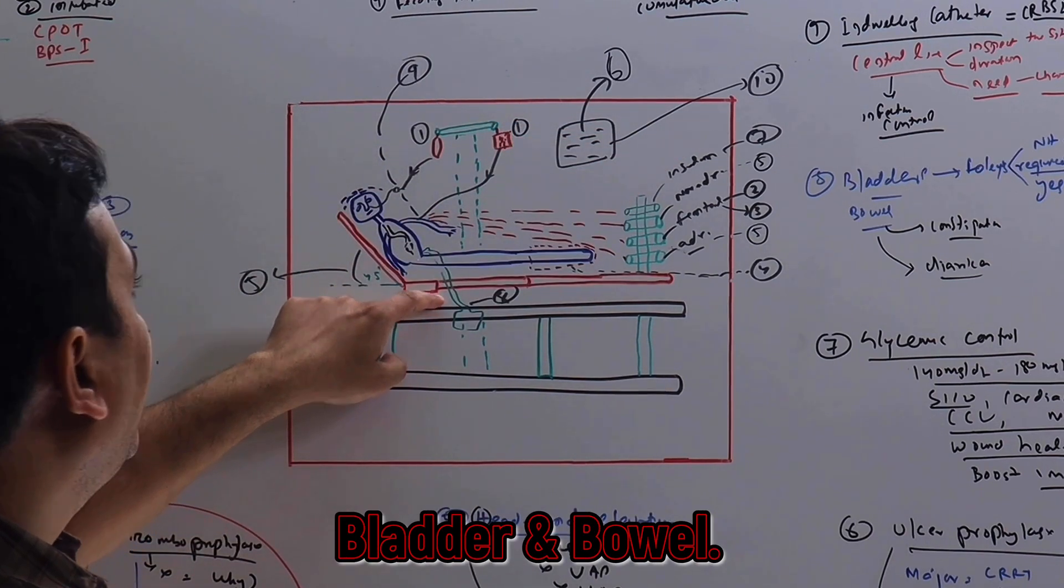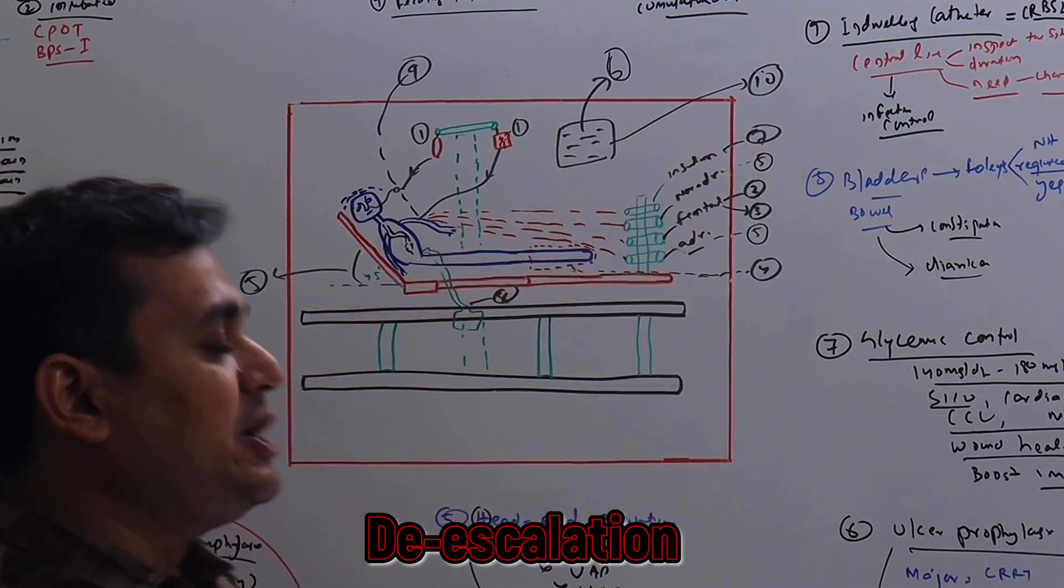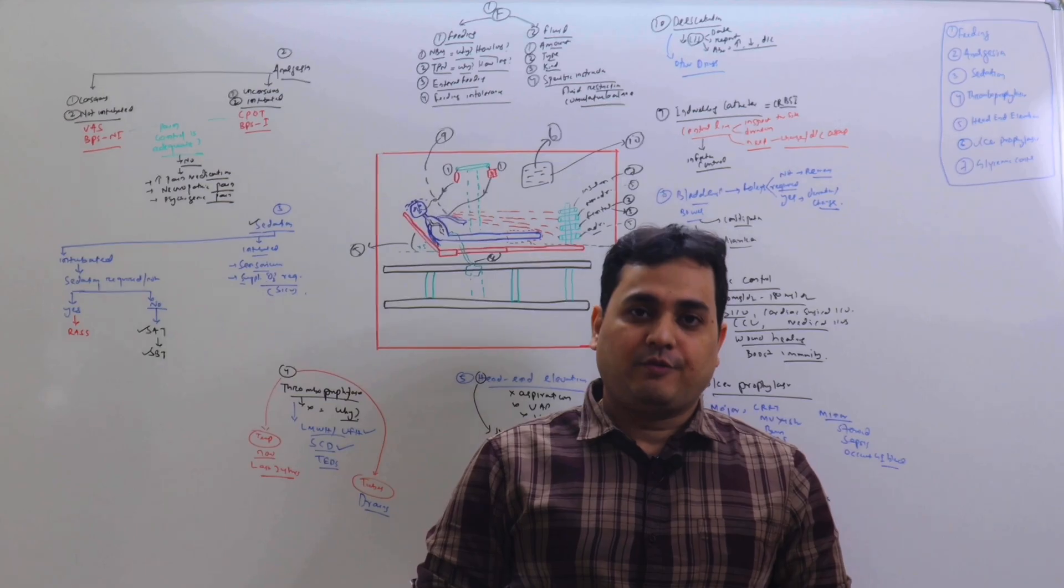Number five is head end elevation and hemodynamics. Number six is ulcer prophylaxis. Number seven is glycemic control. Number eight is bladder and bowel. Nine is indwelling catheters. And number ten is de-escalation of antibiotics and other drugs. Thank you very much.